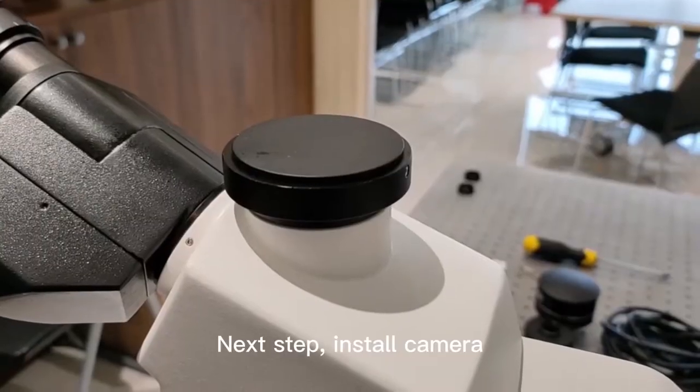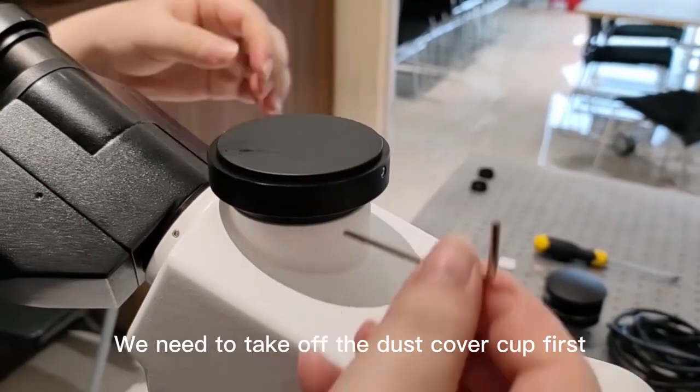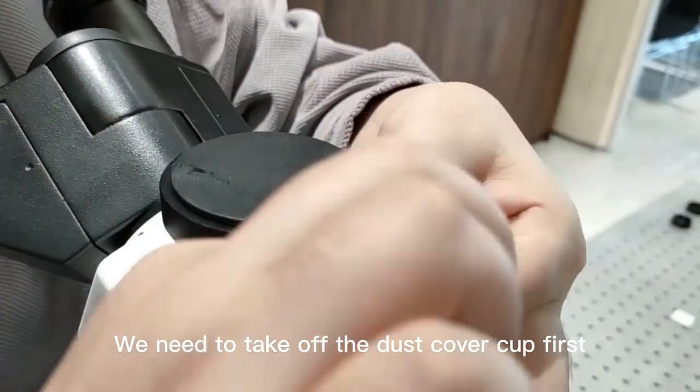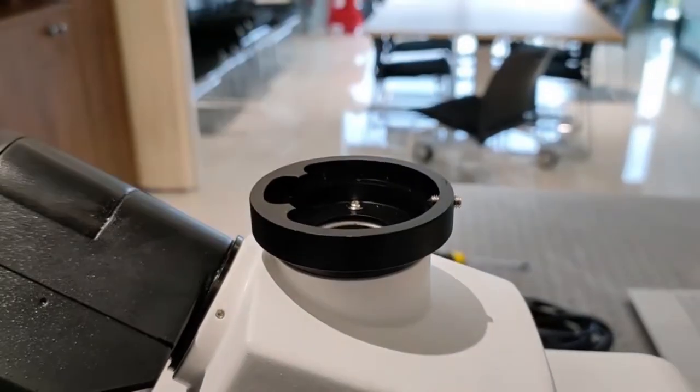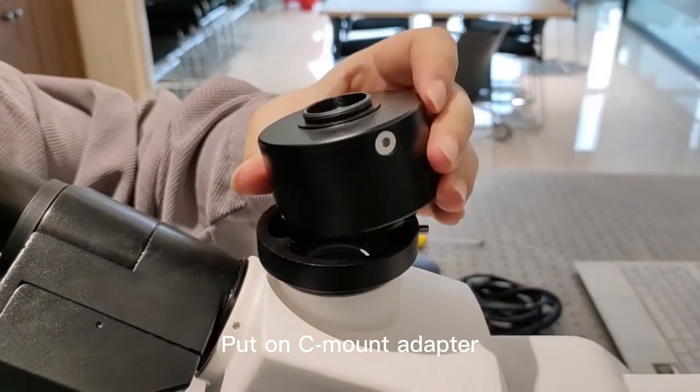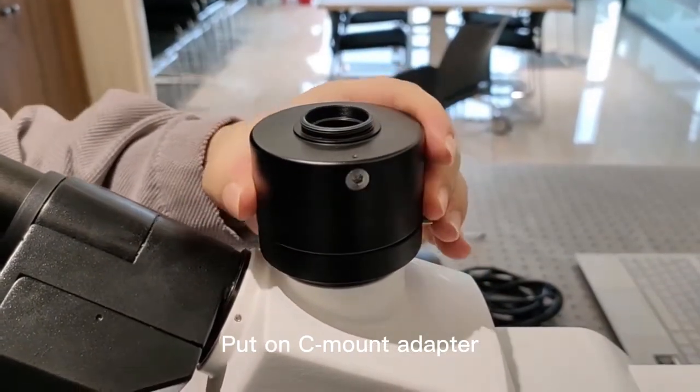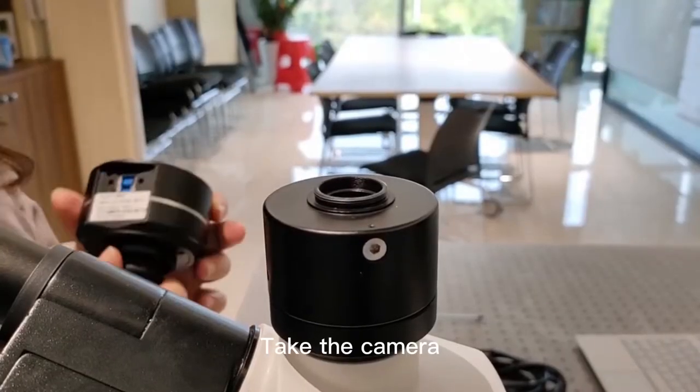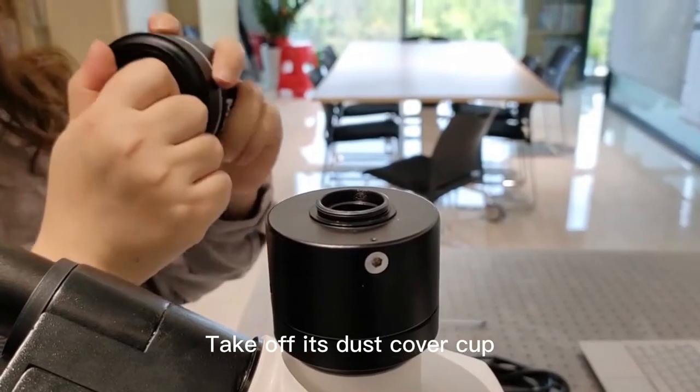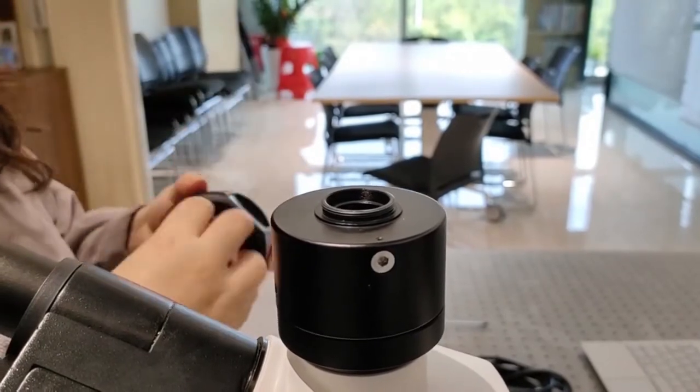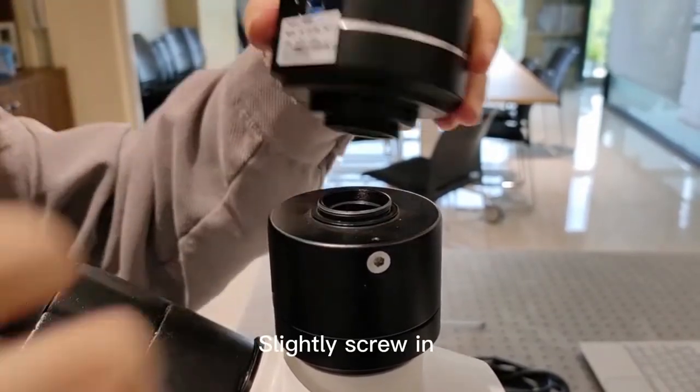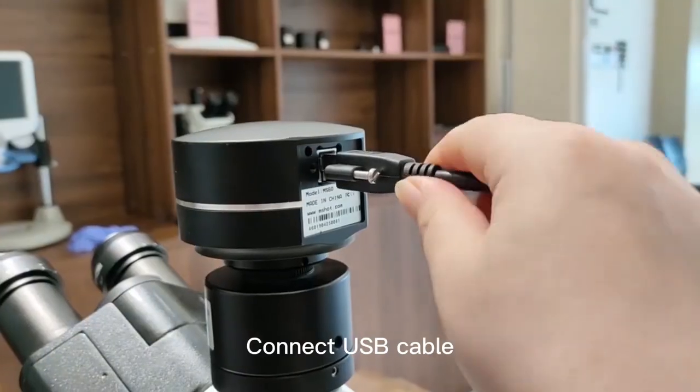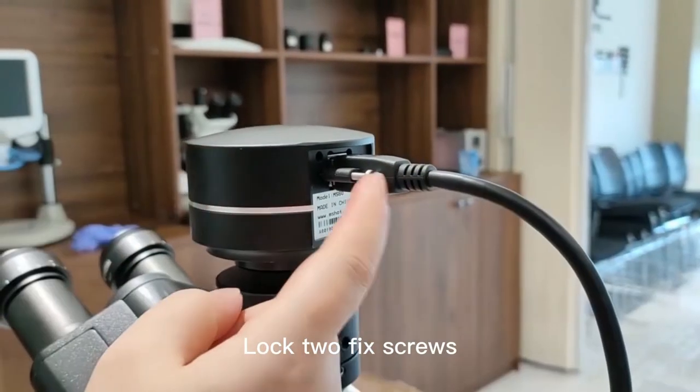Next step, install the camera. We need to take off the dust cover cap first. Put on the c-mount adapter. Tighten the screw. Take the camera. Take off its dust cover cap. Slightly screw in. Connect the USB cable. Lock two fixed screws.